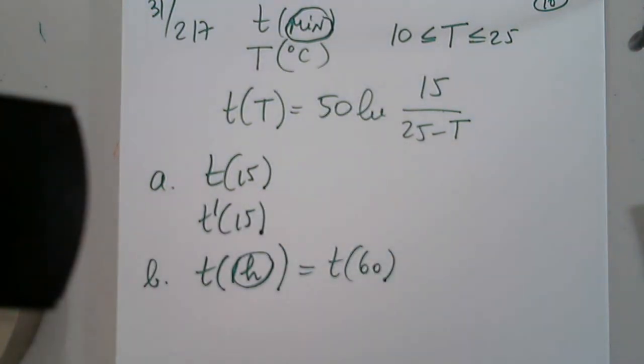So t(15) is not going to be any problem. We just plug it in. I'm going to share my screen. And the function is 50·ln(15/(25-T)). Careful, careful, careful. If you do not use these parentheses, the calculator will only divide 15 by 25 and subtract X from that fraction. So be very careful.